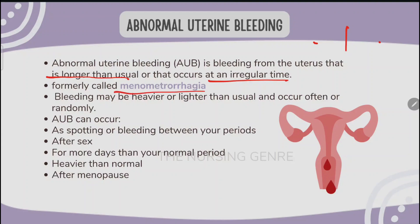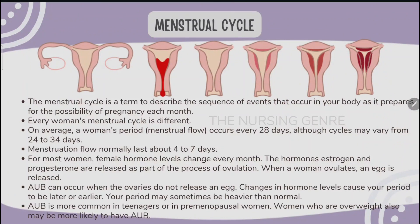Abnormal uterine bleeding was formerly called menometrorrhagia. Bleeding may be heavier or lighter than usual, or random. AUB can occur as spotting or bleeding between periods, or bleeding after sexual intercourse. It can last for more days than your normal period, or be heavier than normal flow. Bleeding after menopause is also considered abnormal uterine bleeding.